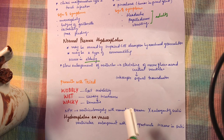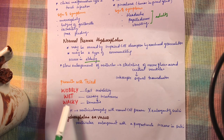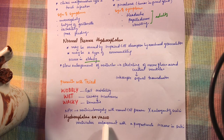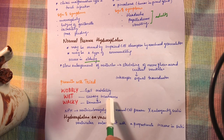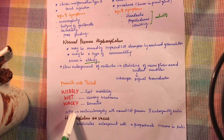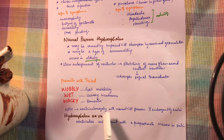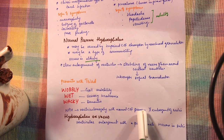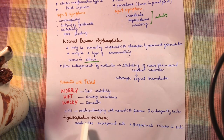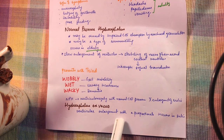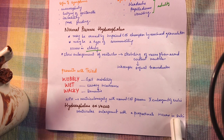Urinary incontinence is caused by disruption of communication between the cortex and the cerebral micturition center. Dementia and decreased executive functioning are caused by stretching of the paraventricular limbic fibers. NPH leads to ventriculomegaly with normal CSF pressure, and there is no enlargement of the sulci — unlike hydrocephalus ex-vacuo, which is ventricular enlargement with a proportionate increase in the sulci.